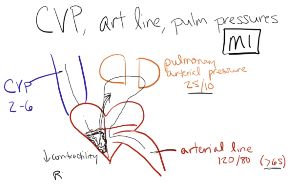So our right ventricular pressure is going to increase. That'll cause a backup of pressure and fluid into your vena cava, so your pressure in your vena cava will go up and your CVP will go up. You will have a high CVP greater than 6 — maybe 12 or 16.